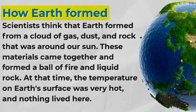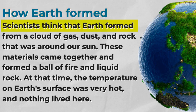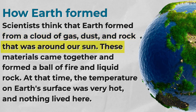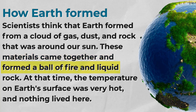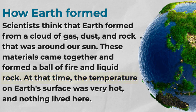How Earth Formed. Scientists think that Earth formed from a cloud of gas, dust, and rock that was around our sun. These materials came together and formed a ball of fire and liquid rock. At that time, the temperature on Earth's surface was very hot, and nothing lived here.